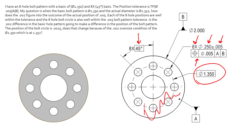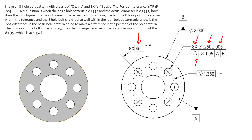Datum A is going to be this top surface here and datum B is our outside diameter, so we've locked in five degrees of freedom with this datum structure. We don't need to lock in that sixth degree of freedom because there's nothing other than this pattern itself that needs to be clocked to anything, so we can leave that open-ended because there's nothing that needs to be clocked together.